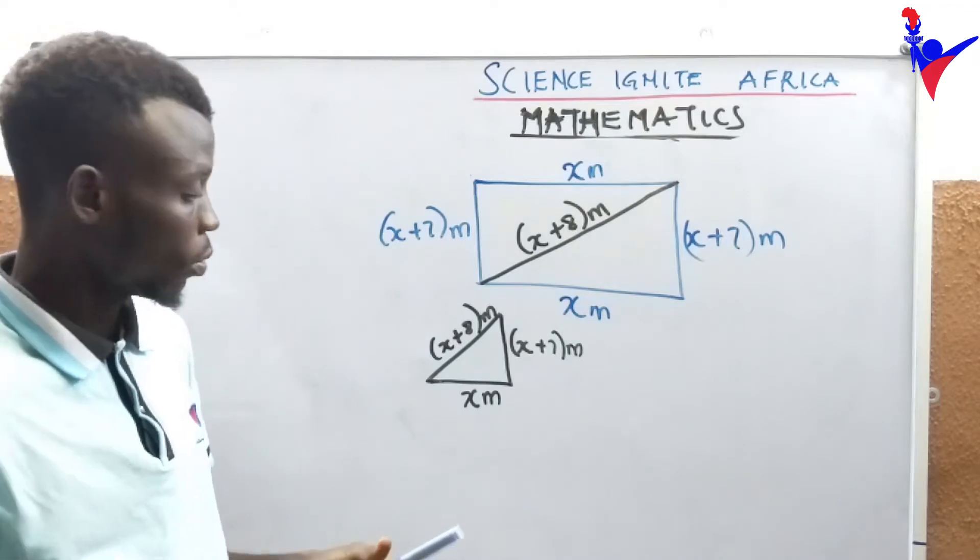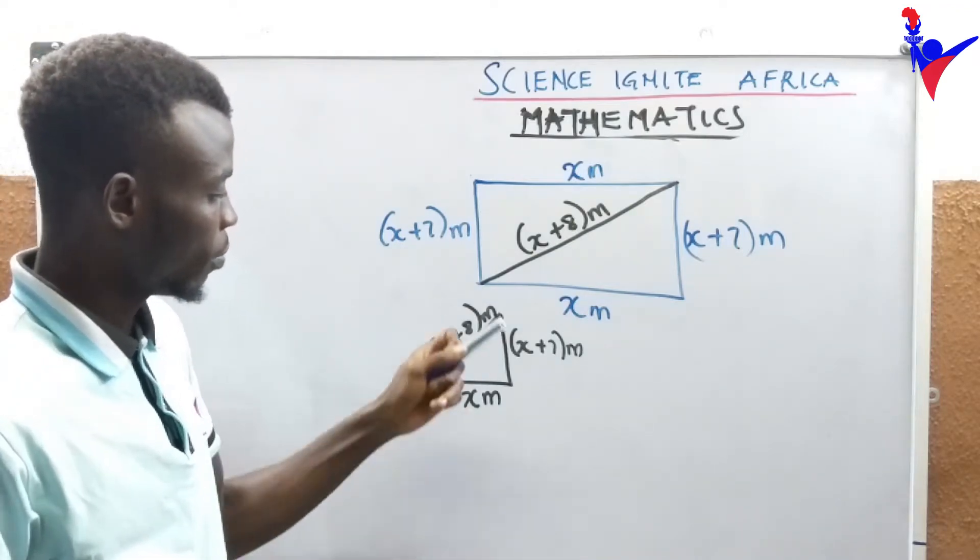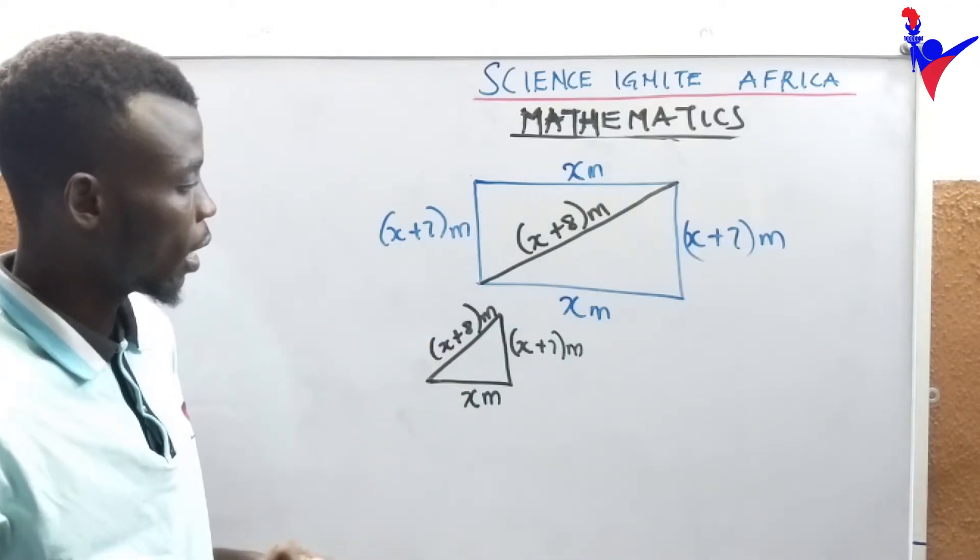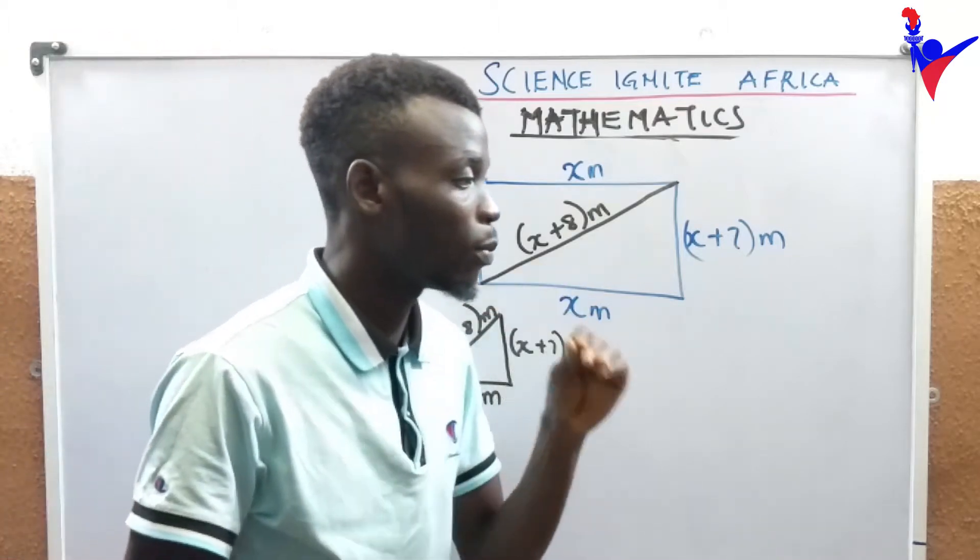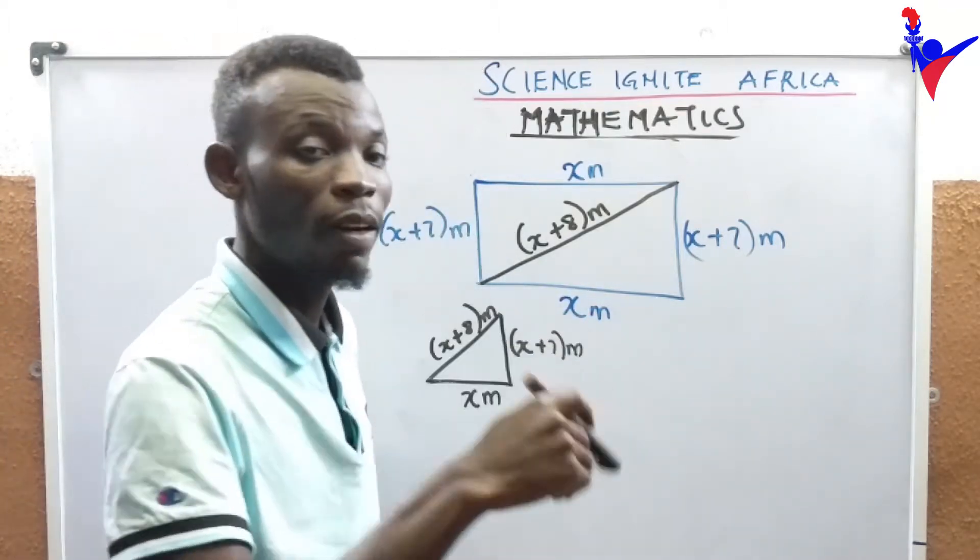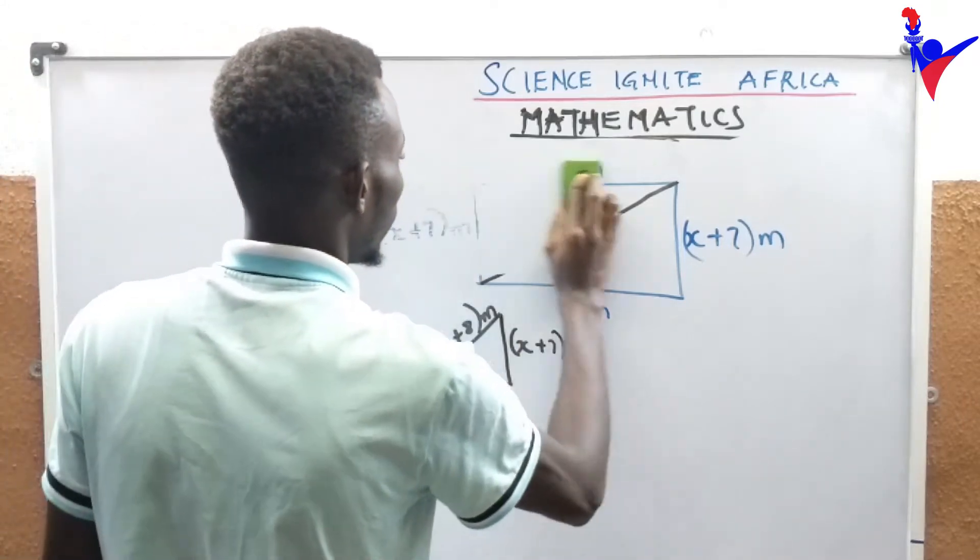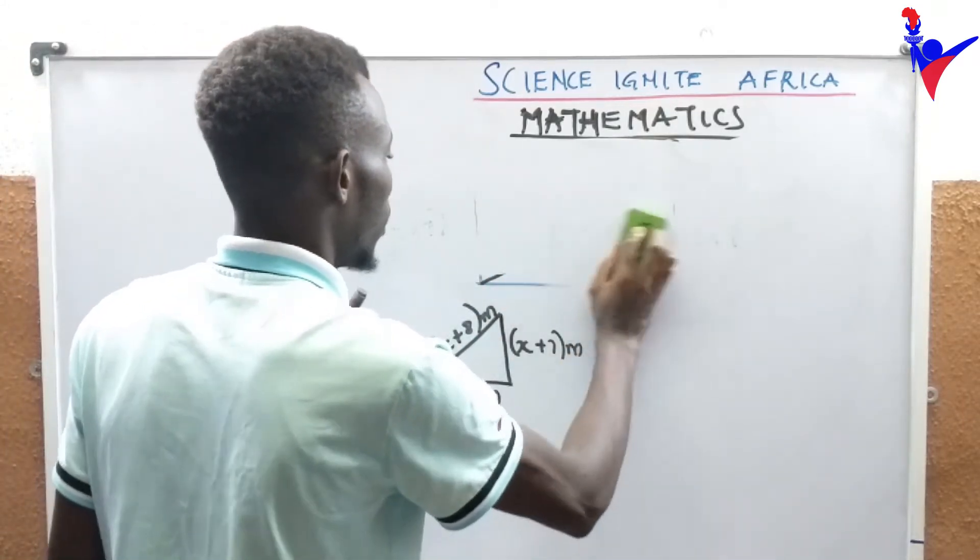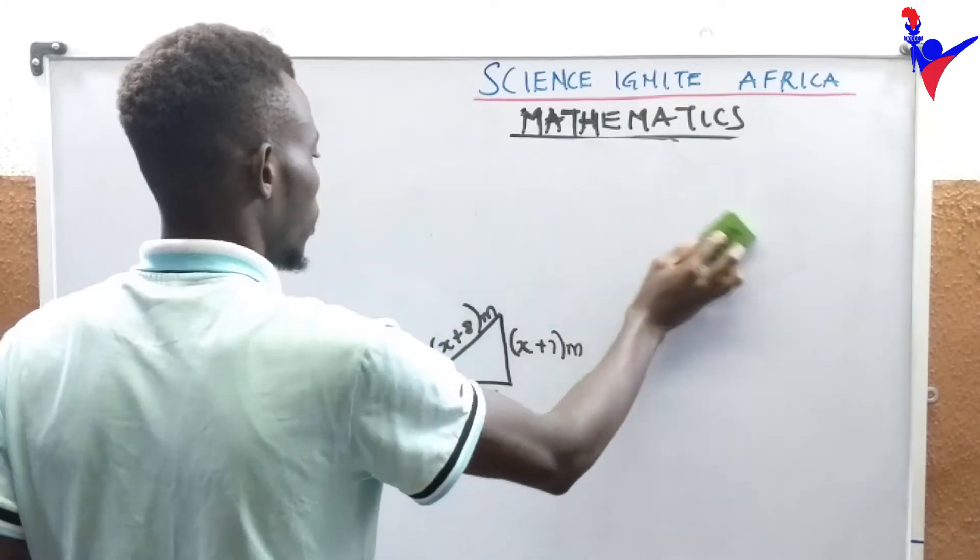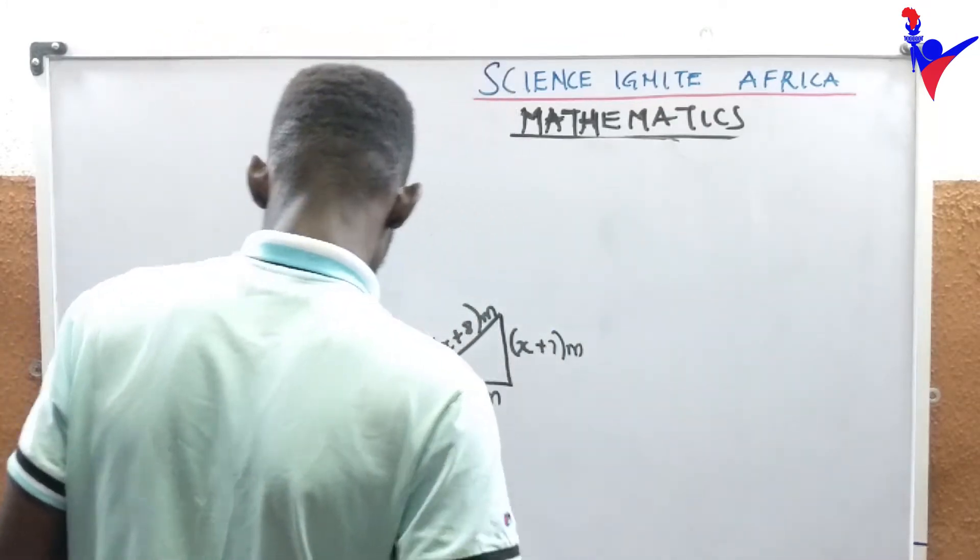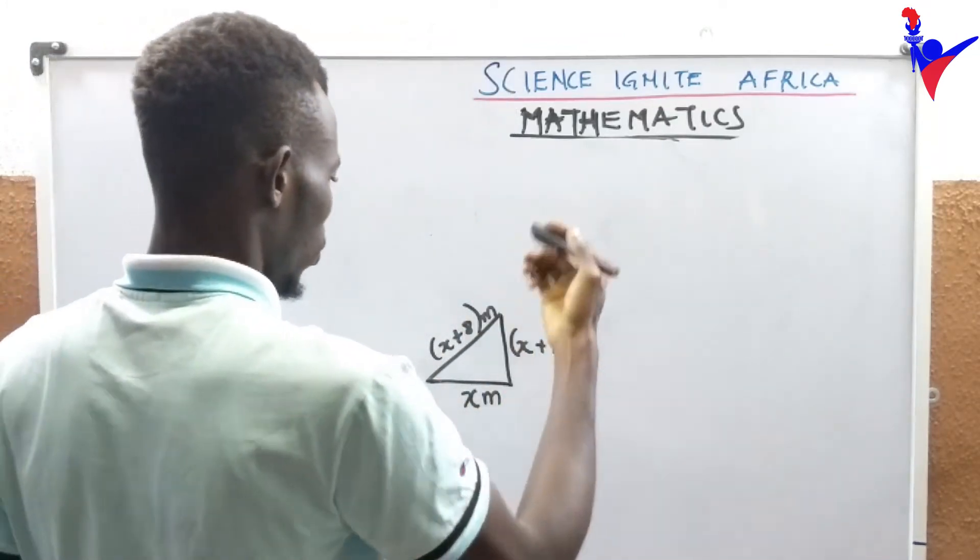Are you with me? x plus 8 meters, x meters, and x plus 7 meters. Find the value of x. Let us deal with this.